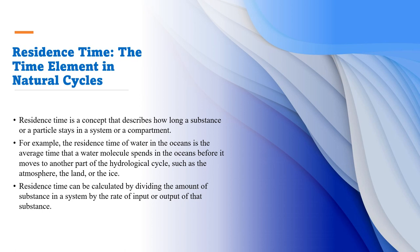Residence time is a concept that describes how long a substance or particle stays in a system. For example, how long carbon in the form of carbon dioxide stays in the atmosphere, or how long carbon in the form of carbonic acid stays in the oceans.